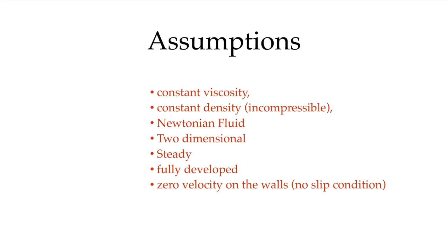It's always good practice to start by stating your assumptions — there are always marks assigned for clearly stating them. The assumptions we know from the Navier-Stokes derivation are: constant viscosity, constant density, Newtonian fluid, two-dimensional problem (ignoring variations in the third direction), steady flow, fully developed flow, and the no-slip condition applied at stationary walls giving zero velocity.